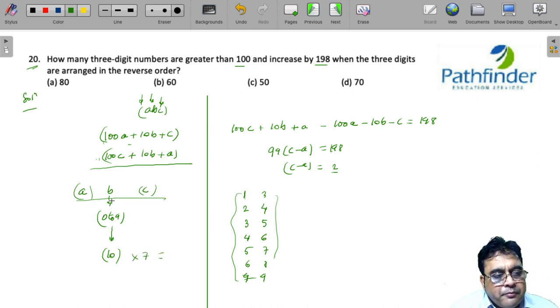So the tens digit can be filled in 10 ways, the units and hundreds digit can be filled in 7 ways. Overall, 10 × 7 = 70 such numbers are possible.